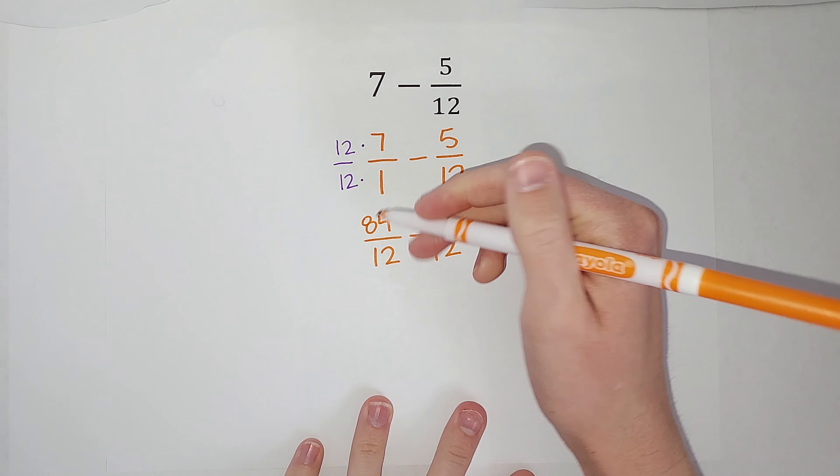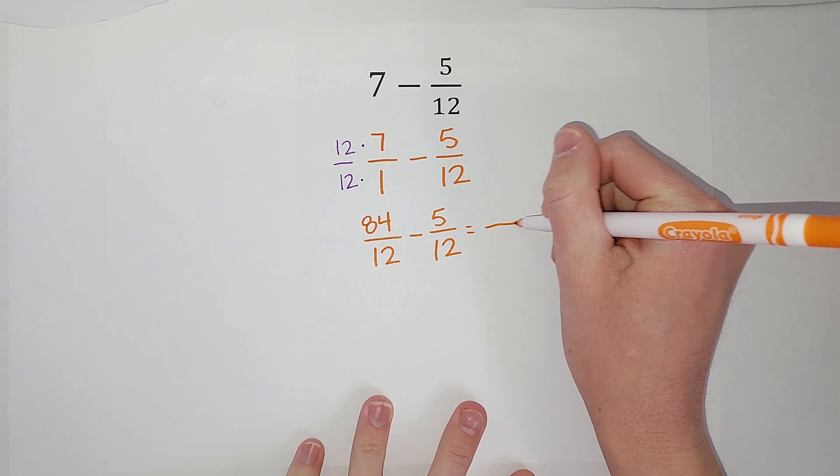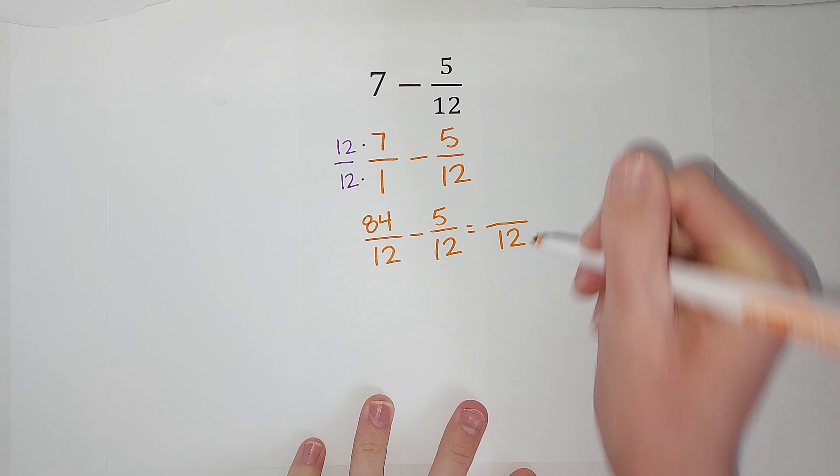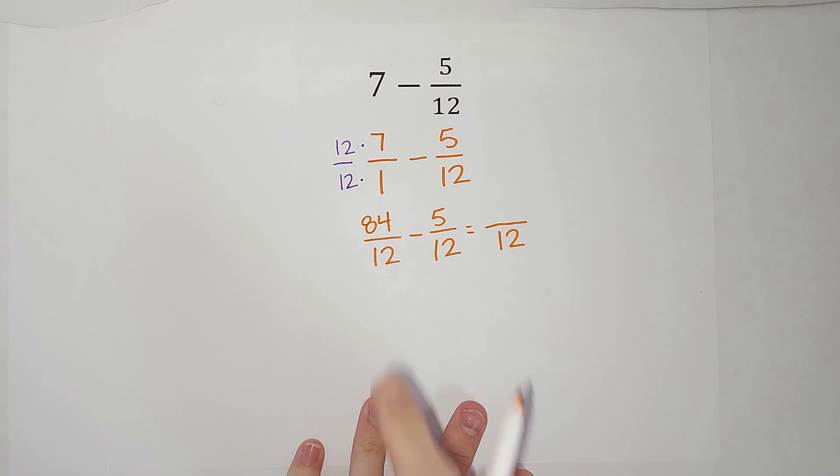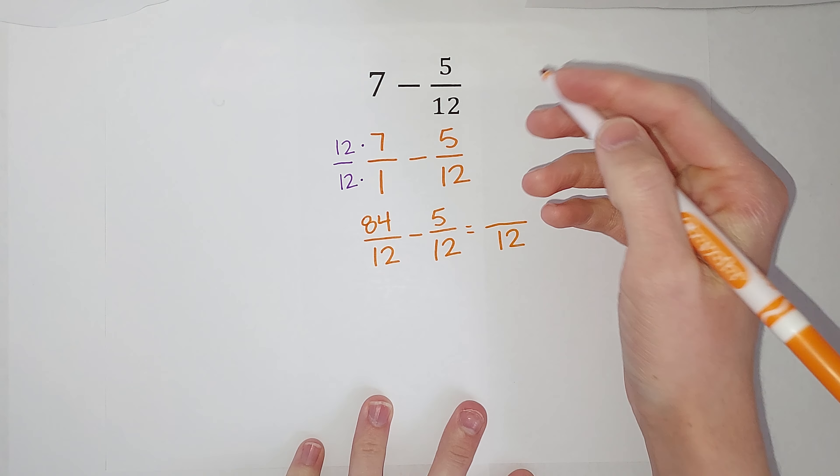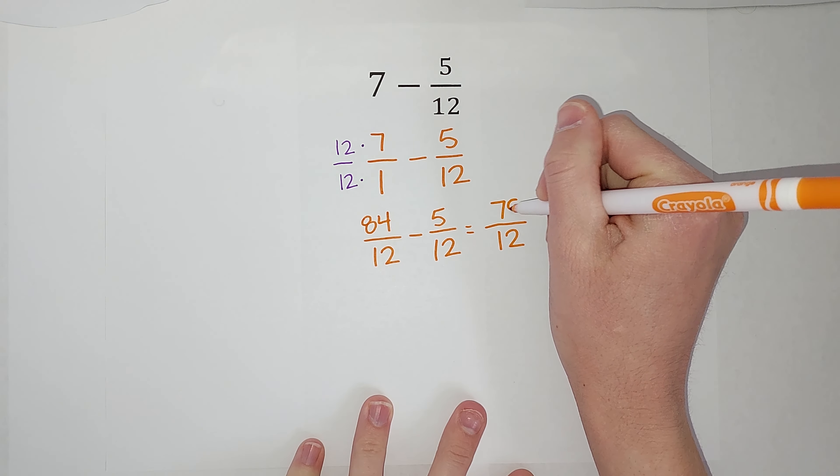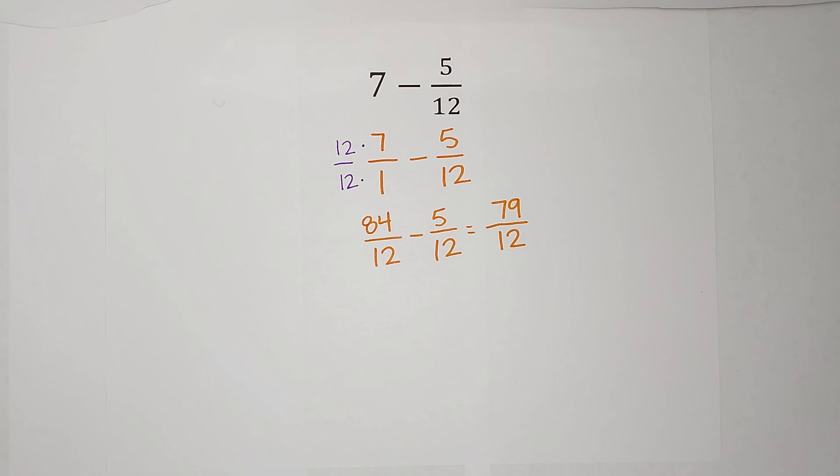Now we're going to subtract these. When I subtract fractions, the denominator stays the same. And then I do 84 minus 5, which gives me 79.